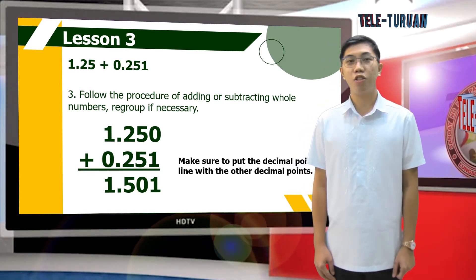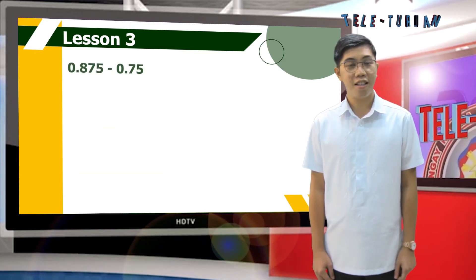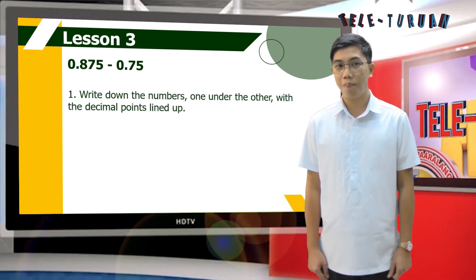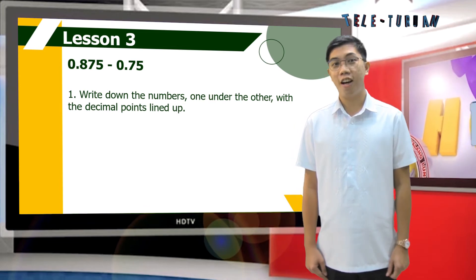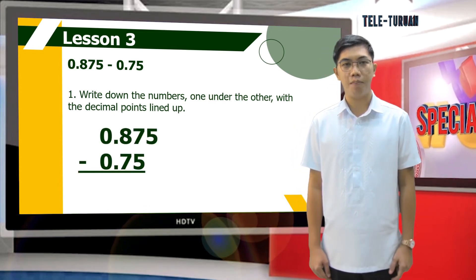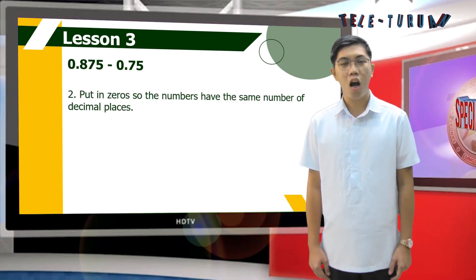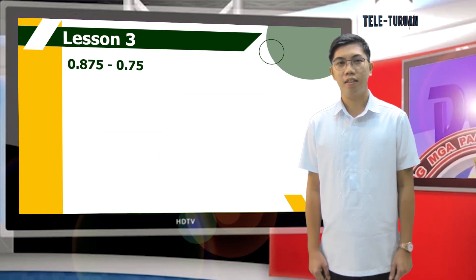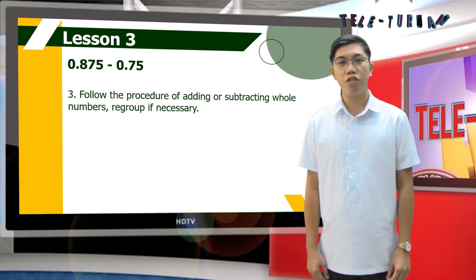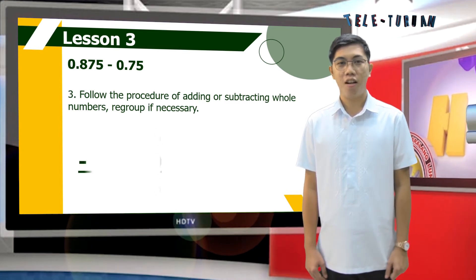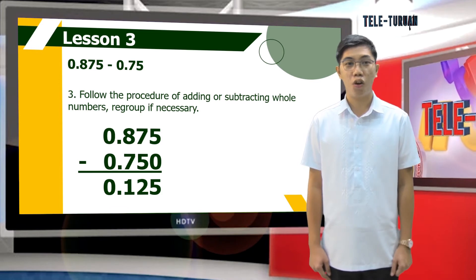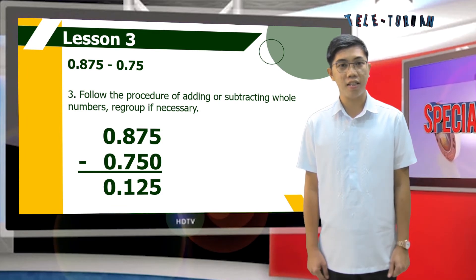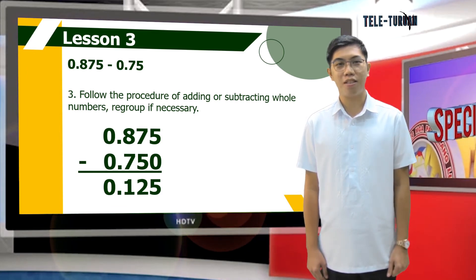Let's try to subtract: 875 thousandths minus 75 hundredths. First step, write down the numbers one under the other with the decimal points lined up. Second step, put in zeros so the numbers have the same number of decimal places. Third step, follow the procedure of subtracting whole numbers, regrouping if necessary. The difference of 875 thousandths and 75 hundredths is 125 thousandths.